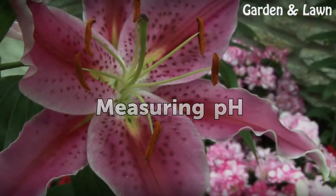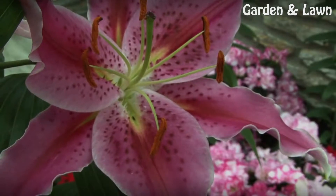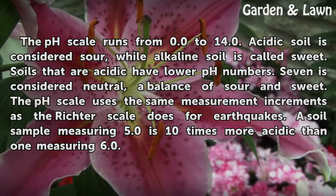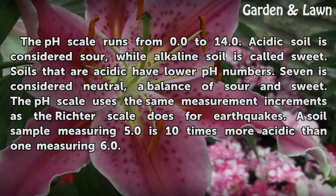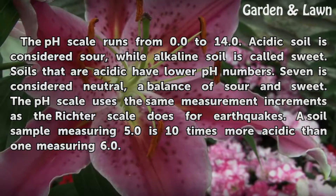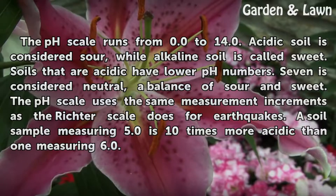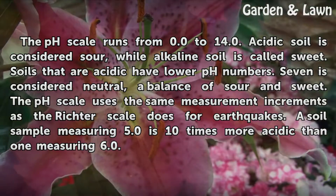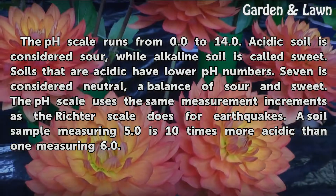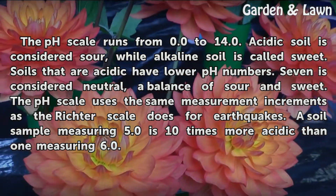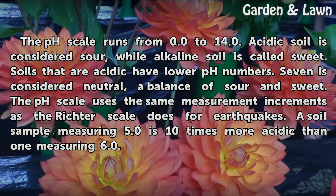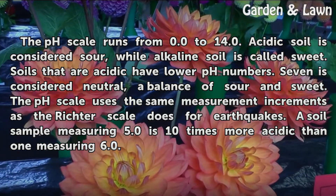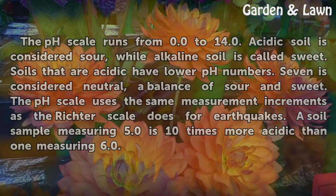Measuring pH. The pH scale runs from 0.0 to 14.0. Acidic soil is considered sour, while alkaline soil is called sweet. Soils that are acidic have lower pH numbers. 7 is considered neutral, a balance of sour and sweet. The pH scale uses the same measurement increments as the Richter scale does for earthquakes. A soil sample measuring 5.0 is 10 times more acidic than one measuring 6.0.